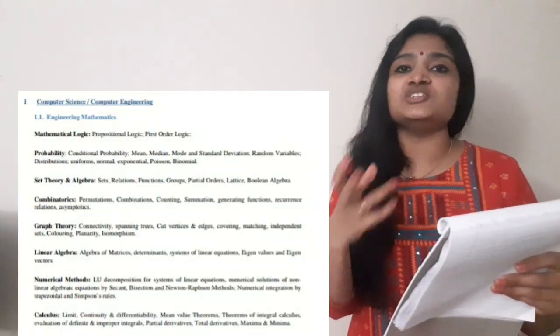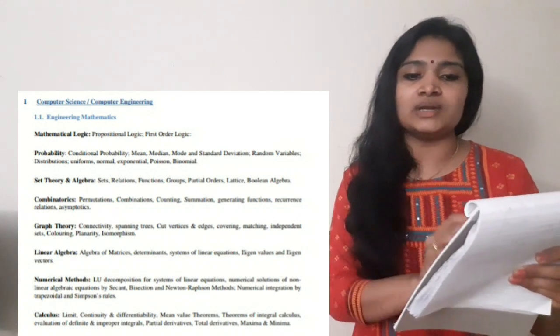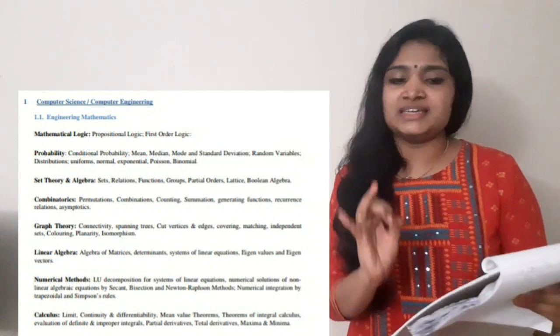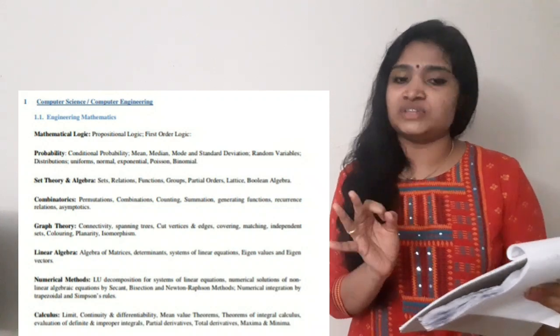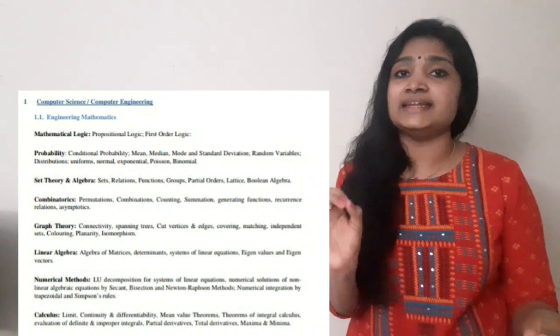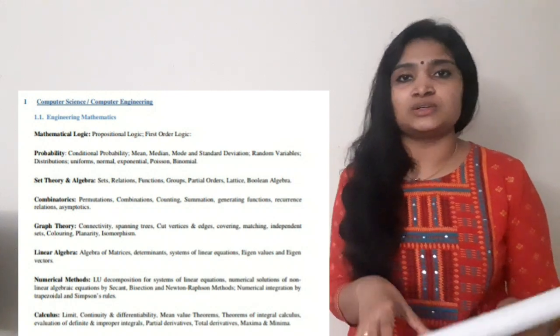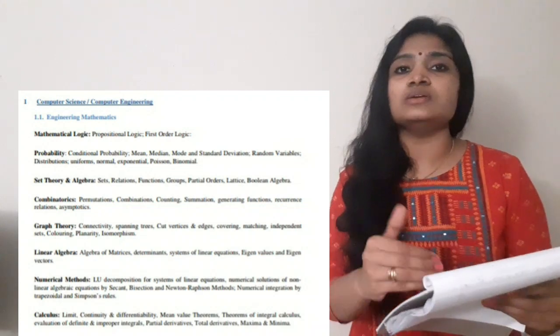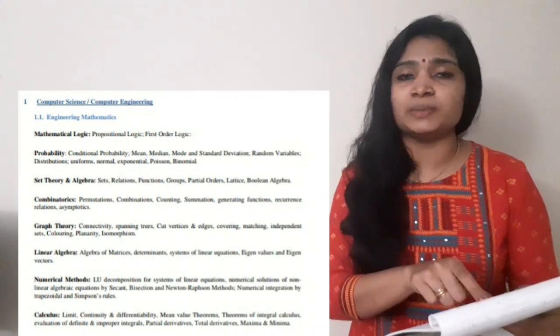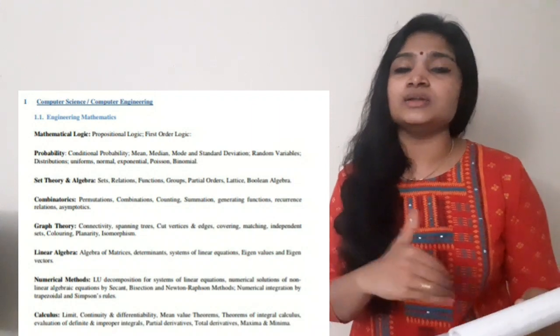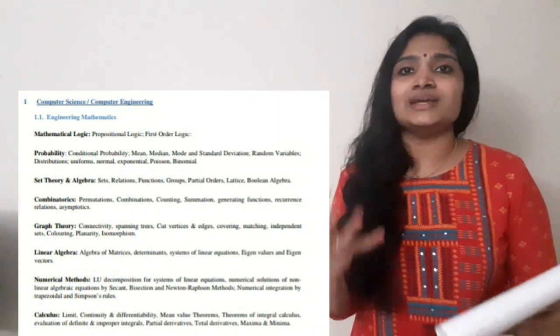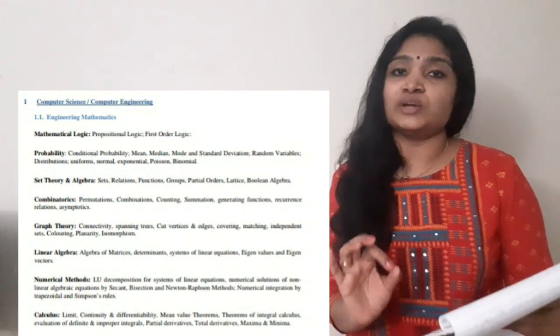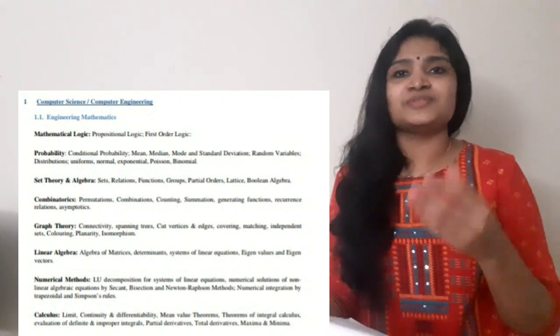For the Computer Science branch, you have to study Engineering Mathematics, covering: mathematical logic, probability, set theory, graph theory, permutation and combination, linear algebra, numerical methods, and calculus. The detailed topics from each area are also given in the notification, which I'll share in the description box.